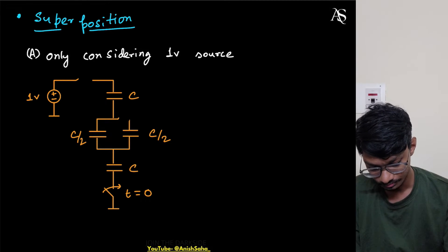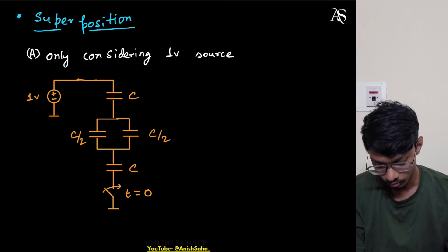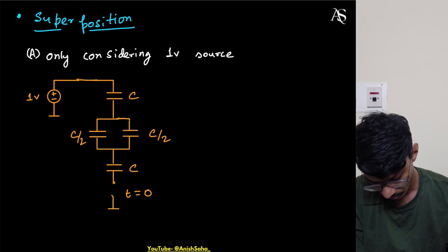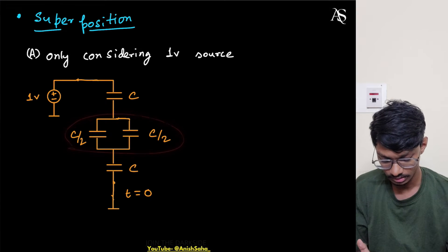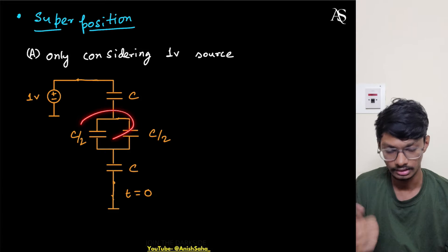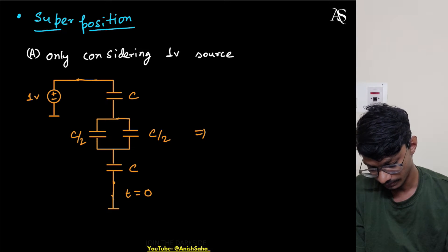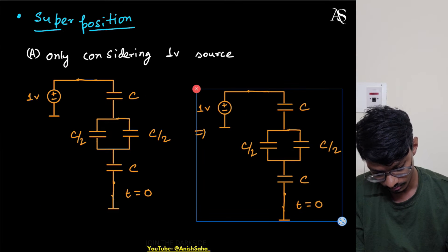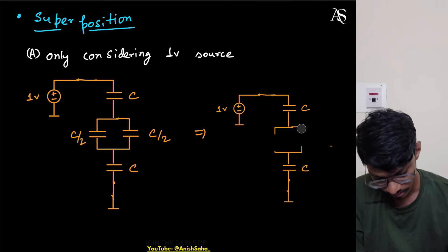Both switches are on now. What we can do is find the equivalent capacitance, then find the drop across each of them. You can also use the charge method as explained in my previous video, but here we'll simply copy the circuit and work with equivalent capacitance.